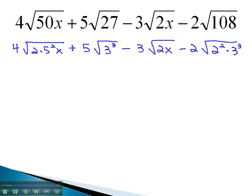We can now simplify by dividing the exponents by the index of 2. 5 squared can come out as a 5, giving us 20 times the square root of 2x. 3 cubed has 1, 3 coming out, and we have a remainder of 1, so 1, 3 will remain in the radical. Multiplying, we now have 15 times the square root of 3.